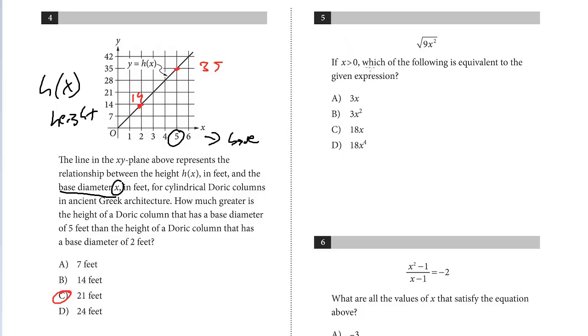Number 5, if x is positive, which of the following is equivalent to the given expression? We just take the square root of 9x squared and you should see that is just 3x. That is it. It has to be positive. Square root of 9 is 3, square root of x squared is x.